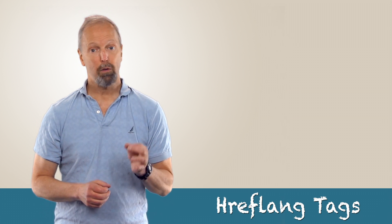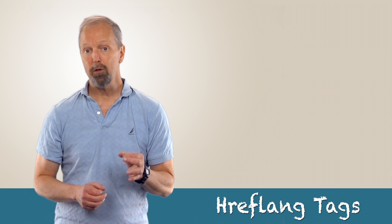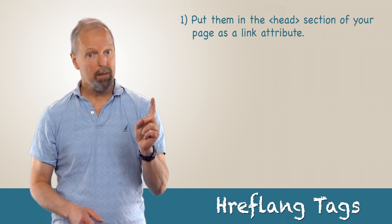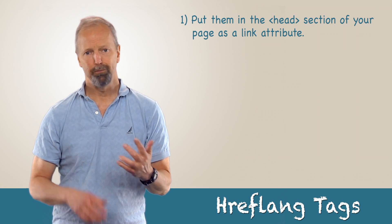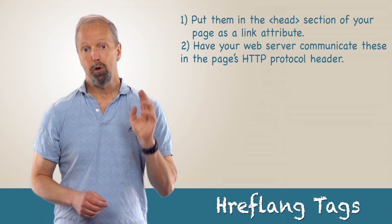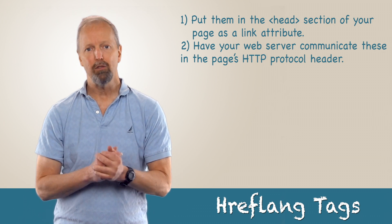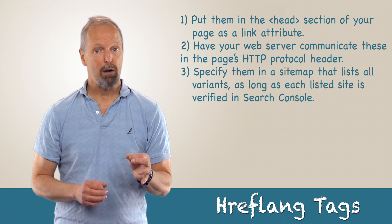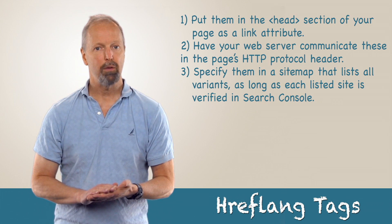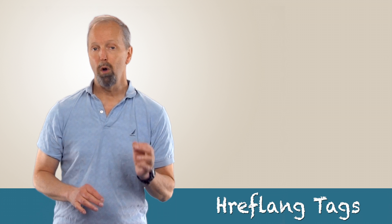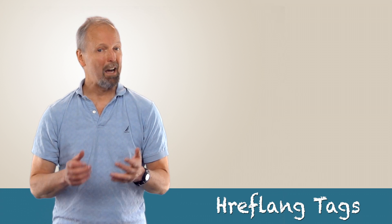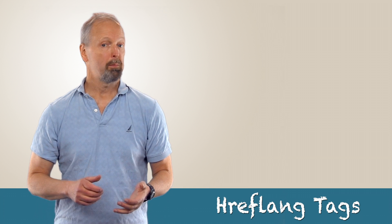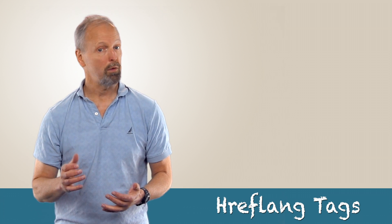I described this based on the assumption that you would put the hreflang tags as markup in the head section of your website, but there are other options. Option one: you could put it in the head section of your page as a link attribute — that's what I described before. Option two: have your web server communicate these in the page's HTTP protocol header. Option three: specify them in a sitemap that lists all variants, as long as each listed site is verified in Google Search Console. Only specify hreflang by one of these three methods. Putting it in multiple places carries too much risk that you'll forget to update one of them, and providing search engines with conflicting instructions is always a bad idea.